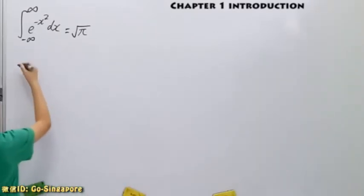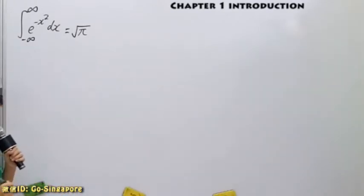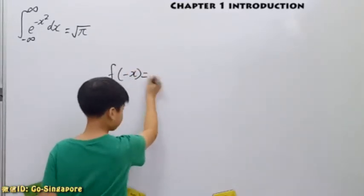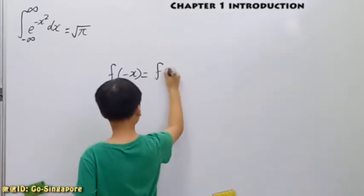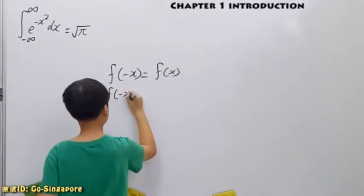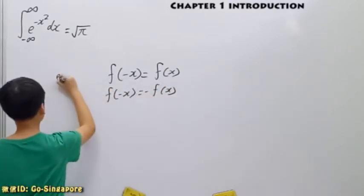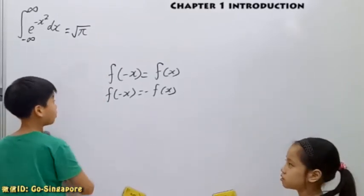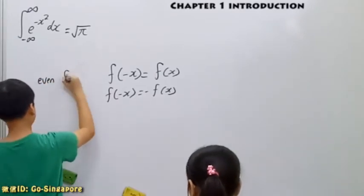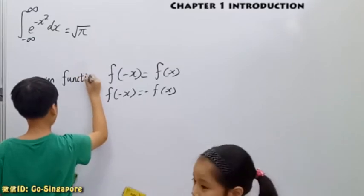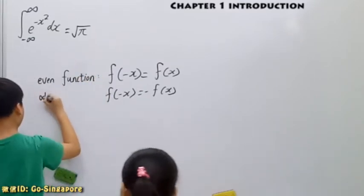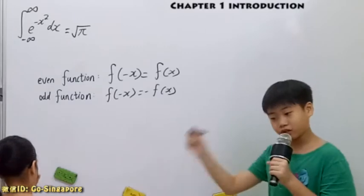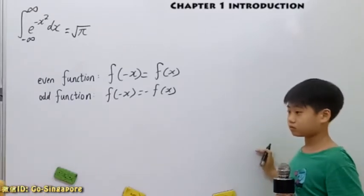Do you know what is an even function? What is an odd function? So an even function, f negative x is equal to fx, and for odd functions, f negative x is equal to negative fx. Can you give an example of an even function? Cos x.